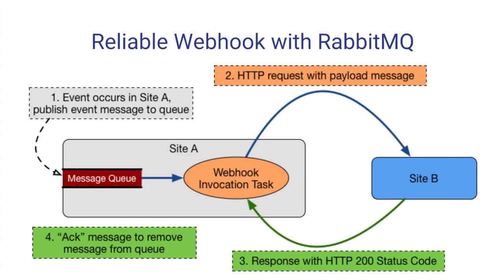So how do we achieve that reliability? One way is to use RabbitMQ. With RabbitMQ, you introduce a message queue, which is responsible for keeping messages until they are successfully delivered. In this workflow, we introduce a message queue that lives within RabbitMQ. When an event occurs in site A, we publish that event message to the message queue. We then have a process called the webhook invocation task, which is a consumer of this message queue. The webhook invocation task makes the HTTP request with the payload to site B. Site B returns a success code of 200, and once we have that success code, the task can acknowledge the message. Once acknowledged, the message is removed from the message queue.